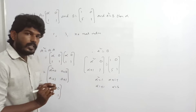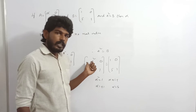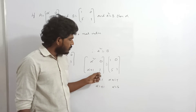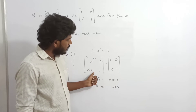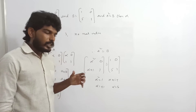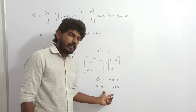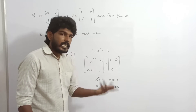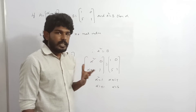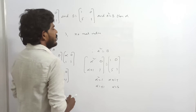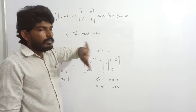Since A squared equals B, we have [alpha squared, 0; alpha plus 1, 1] equals [1, 0; 5, 1]. By equality of matrices: alpha squared equals 1, so alpha equals plus or minus 1. And alpha plus 1 equals 5, so alpha equals 4. These give different values, so for no real value of alpha is A squared equal to B.